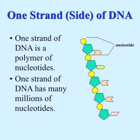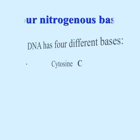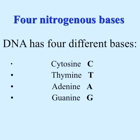One strand of the DNA polymer is made up of nucleotides, and one strand of DNA has millions and millions of these nucleotides. The four nitrogenous bases are cytosine, thymine, adenine, and guanine — usually listed as C, T, A, and G.